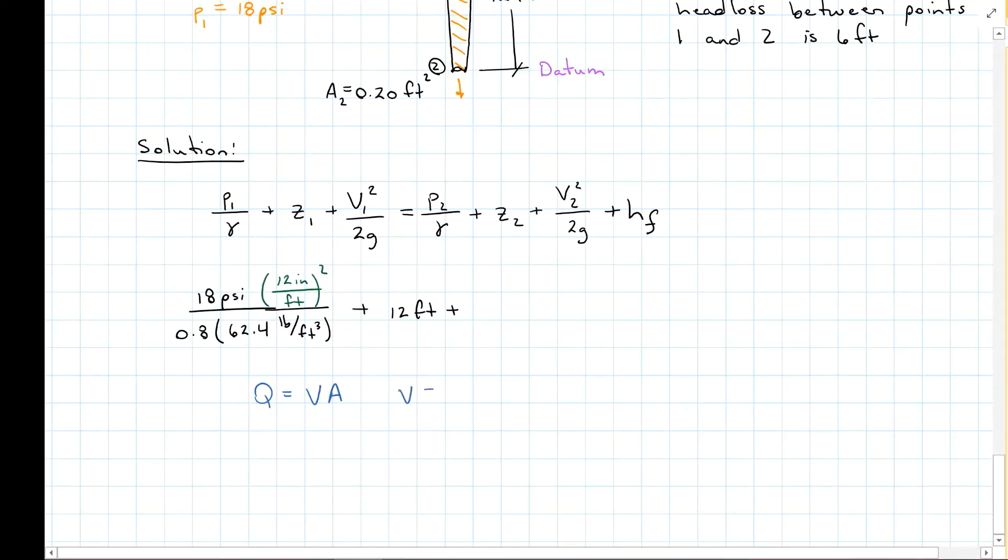So my velocity is going to equal my flow rate, 5 cubic feet per second, all over the cross-sectional area, 0.8 feet squared. And that's going to give me a velocity of 6.25 feet per second. So that's what's going to go up here. 6.25 feet per second squared all over 2 times gravity.